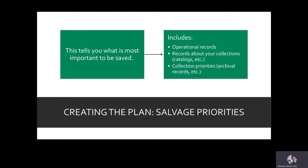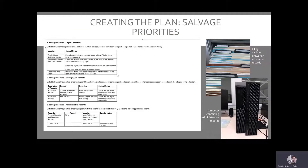Next up in our disaster plan is a list of salvage priorities — the stuff that is most important to save first before anything else. It includes operational records you absolutely need to keep doing business, catalogs and other records about your collections, and actual priorities in your holdings such as particular archival or object collections, rare books, or local history collections. These are the irreplaceable items you'd want to save before anything else. You want to include the locations of these items in your plan so that when it's safe to enter the building, you can begin pulling out what needs to be saved first.